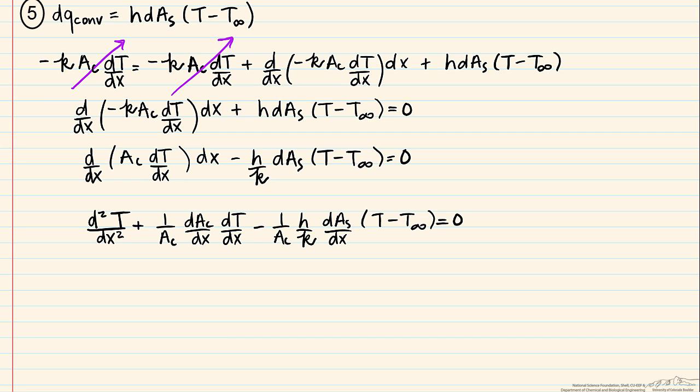We're going to look at a fin with a uniform cross sectional area, and it has a base that has a constant temperature T sub B, and it extends into a fluid that has a temperature of T infinity that's also constant. Our surface area can be written as the perimeter of our element times x, so if we find dA s dx, this is going to equal P. In addition, we said that our cross sectional area was constant, so our derivative of that with respect to x is going to equal zero.